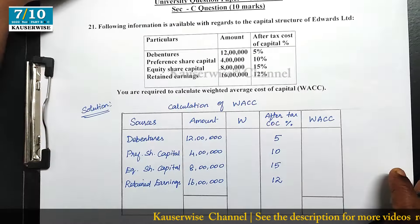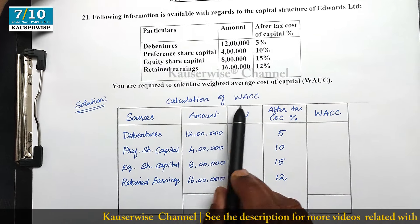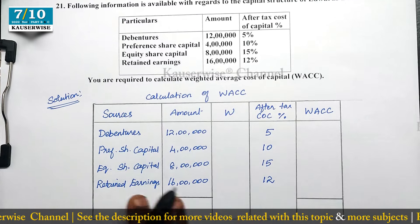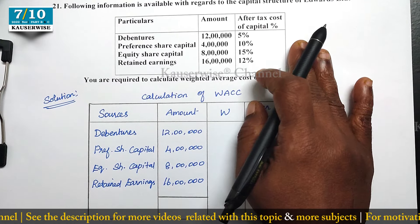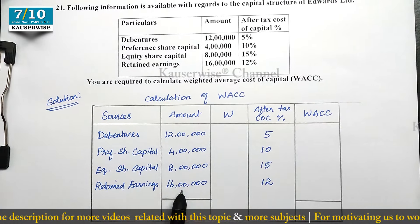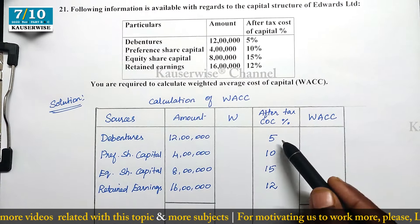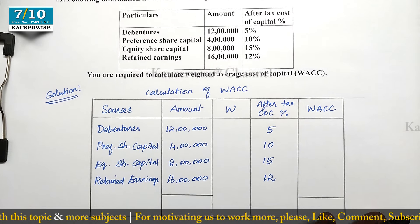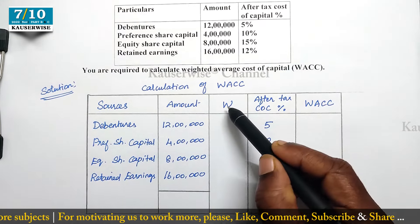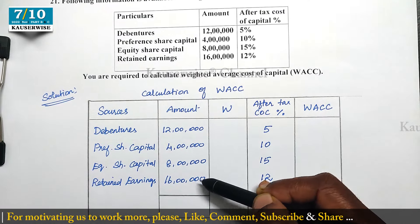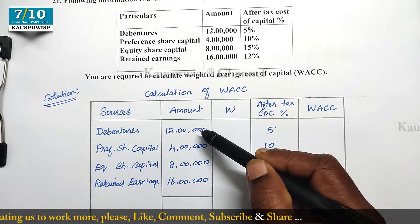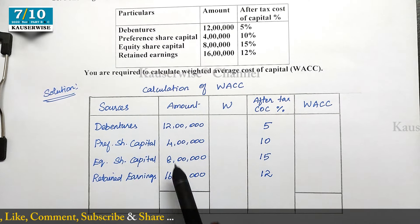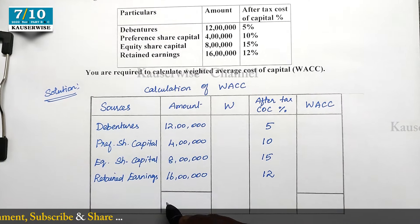Now let's see the solution — calculation of Weighted Average Cost of Capital. The first step is we need to record all the data given in the problem: sources, amount, and after-tax cost of capital — 5%, 10%, 15%, and 12%. Now the first step is we need to find out the weights for each and every component of the capital structure.